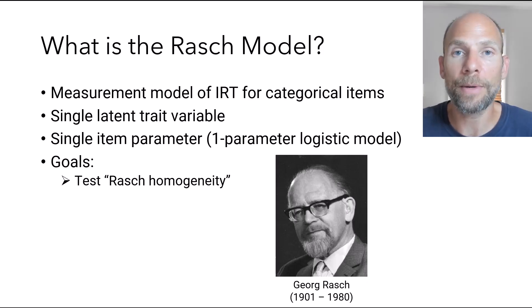They're allowed to differ in difficulty, but they're not allowed to differ in item discrimination. And so when those parameters are fulfilled, that the items are unidimensional and that they have equal item discrimination parameters, then a scale is said to be Rasch homogeneous. And that can be tested with different fit statistics and criteria for model fit.